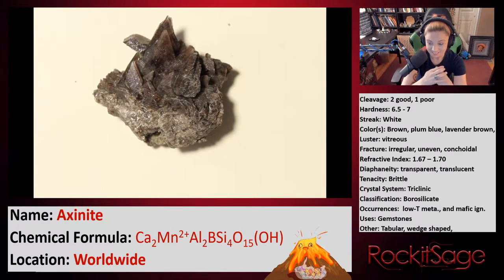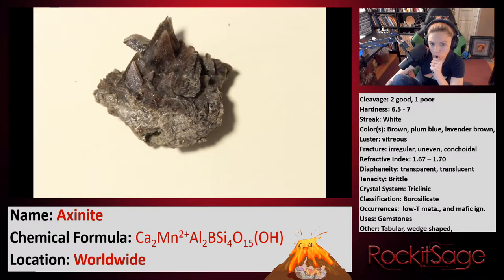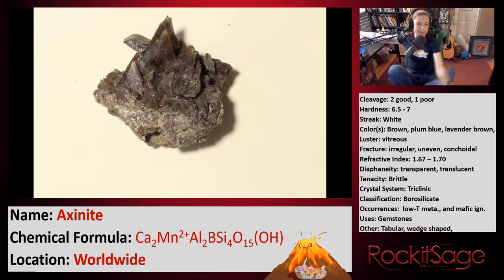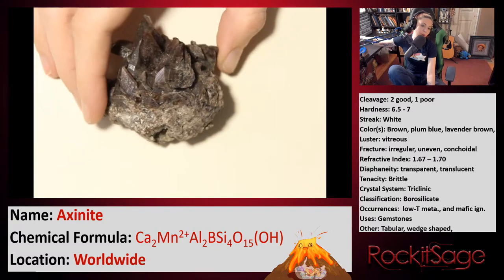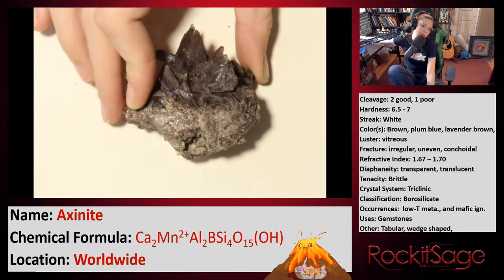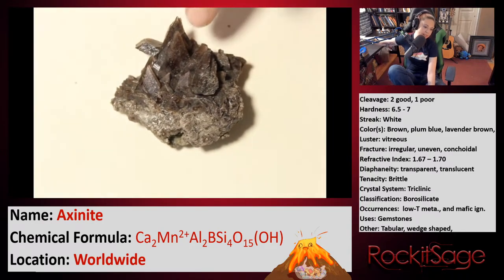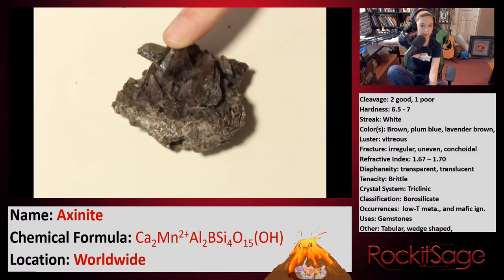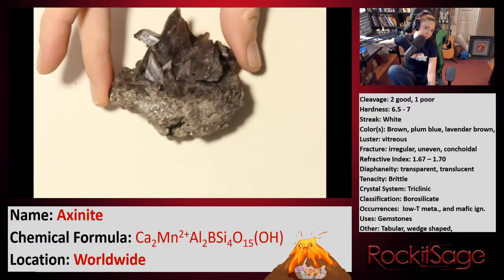And this is a borosilicate. Minerals are not magical geometries — they actually have chemistry behind their structure. The reason they're shaped the way they are all comes down to chemistry. So again, Axonite — this is the iron end member, also called ferro-axonite. Although there is manganese in this particular formula, there are actually four different formulas for the four Axonite varieties. This is the ferro-axonite or iron end member.